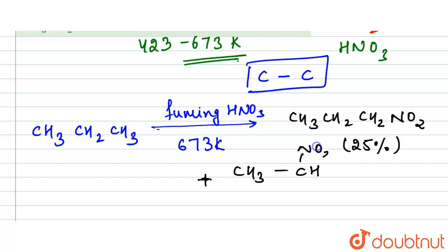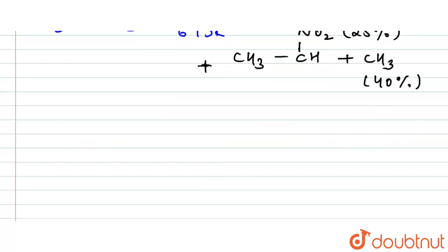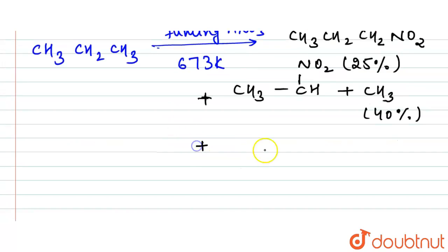We also get nitroethane (CH3CH2NO2), which is 10%, plus nitromethane (CH3NO2), which is 25%, and other oxidation products like CO2, NO2, H2O, etc.